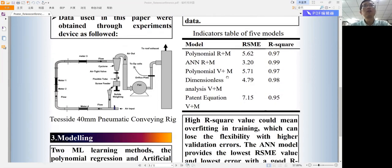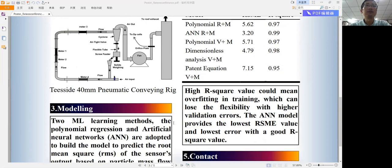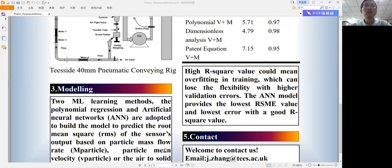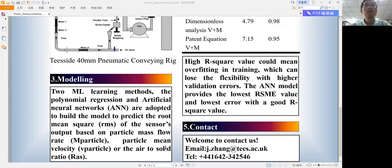They used a 40 millimeter pneumatic conveying rig. Two machine learning methods, polynomial regression and artificial neural networks, were adopted to build the model to predict the root mean square of the sensor's output based on particle mass flow rate, particle mean velocity, or air to solid ratio.